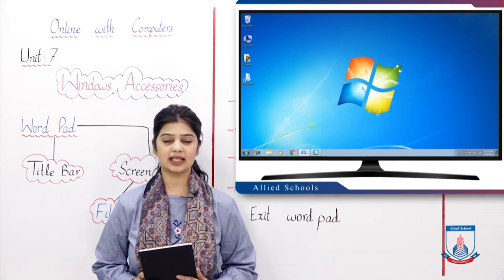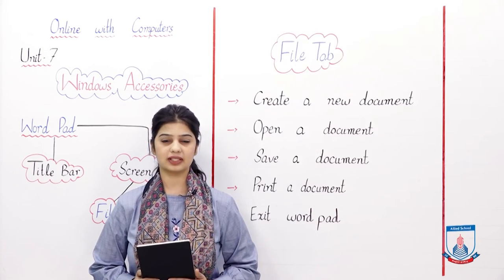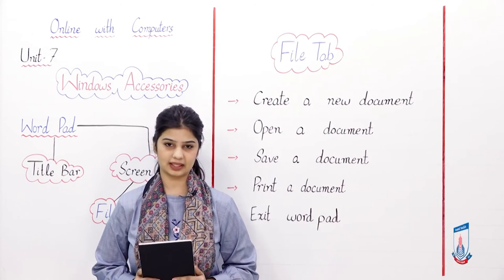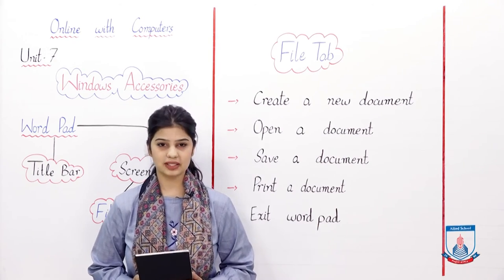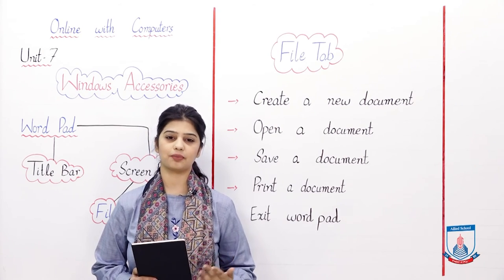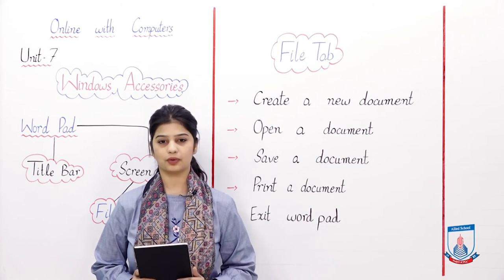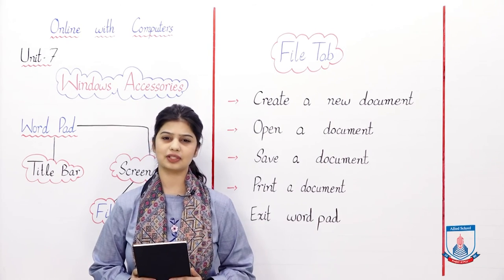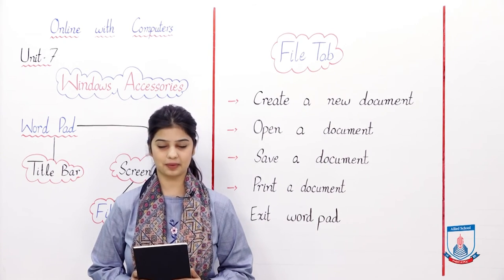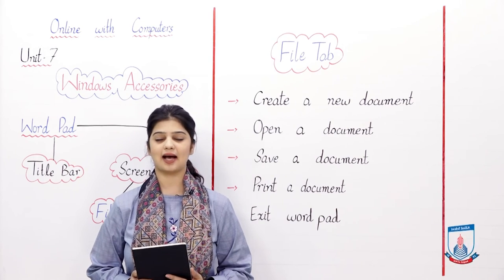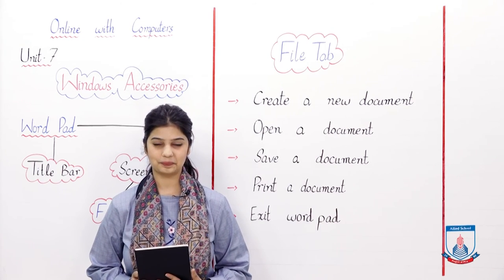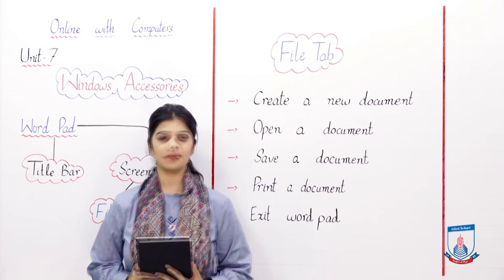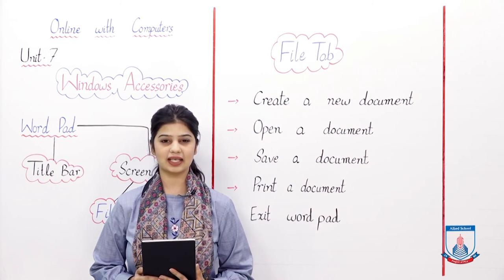Today, we have seen the File tab and what options you can find in it. We created a new document, typed on it, saved it, and opened it again. We also saw how to print and how to exit WordPad. The rest of the tabs we will explore in the next lecture.